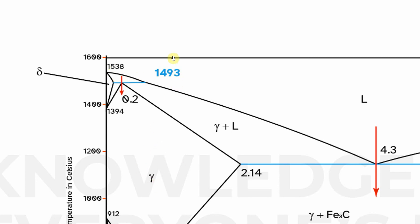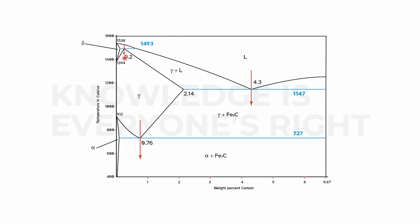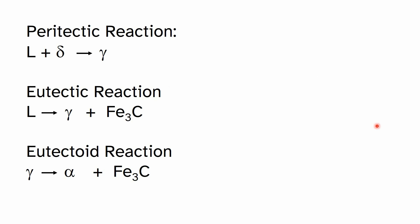These reactions are named peritectic, eutectic, and eutectoid respectively. This is the basic explanation of the iron-carbon phase diagram. In the next video I'll explain this topic in more depth. If I made any mistakes, please correct me in the comments. I will provide this presentation as a PDF in the description links. Thanks for watching.